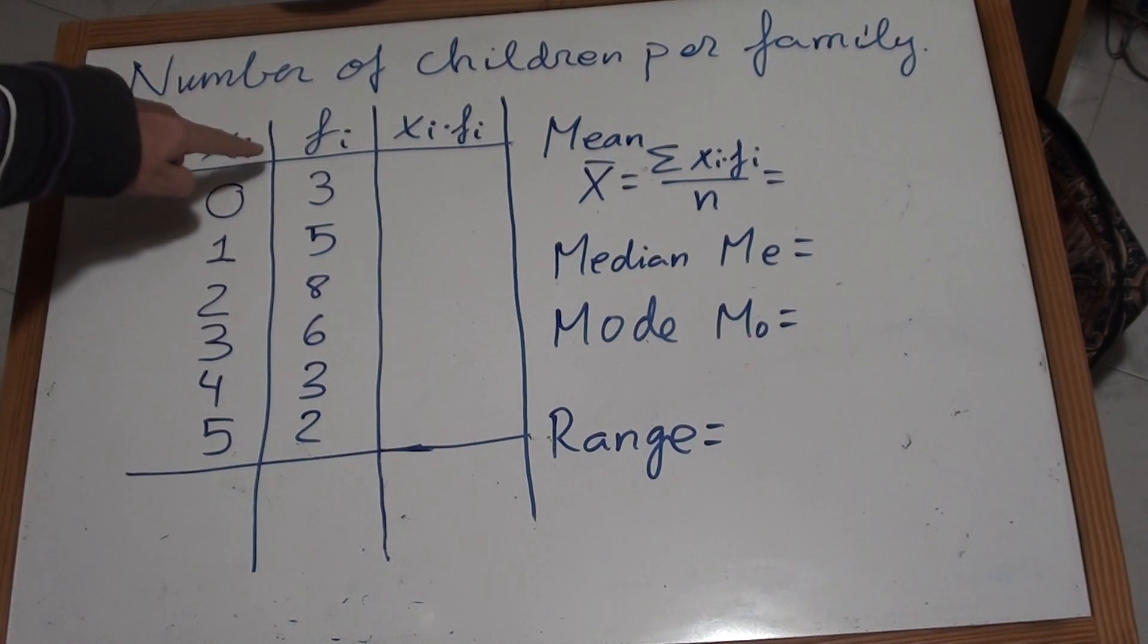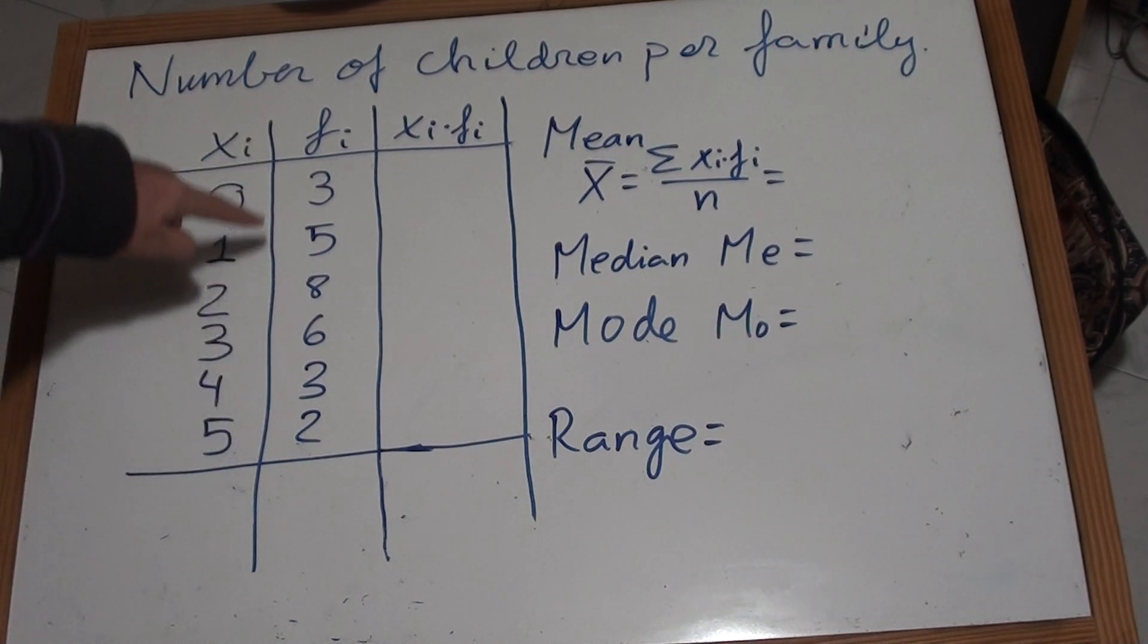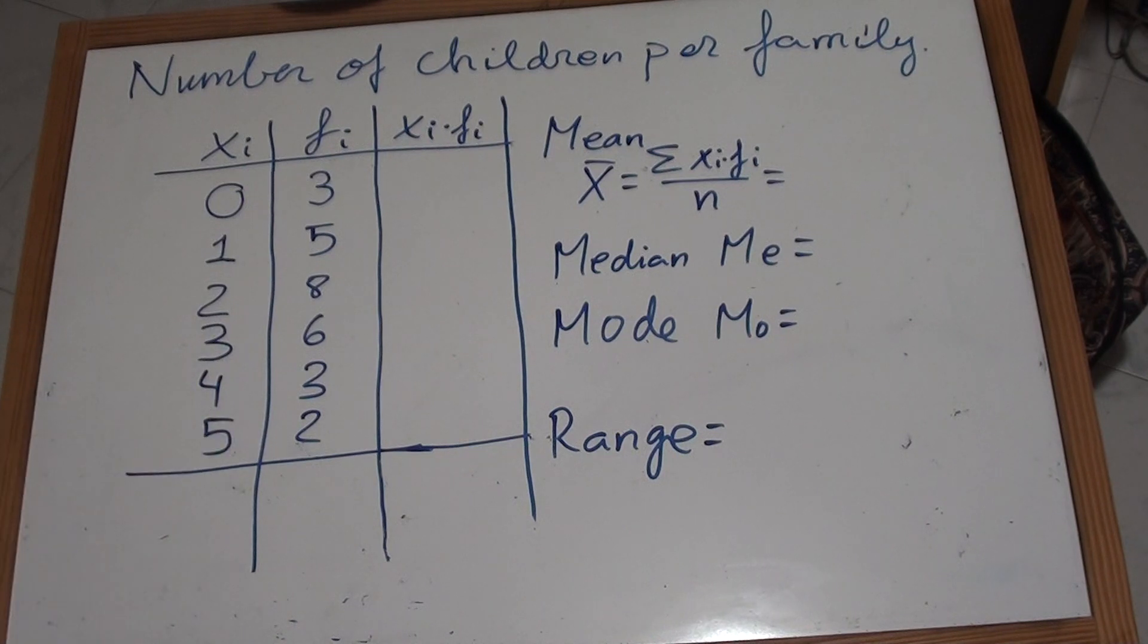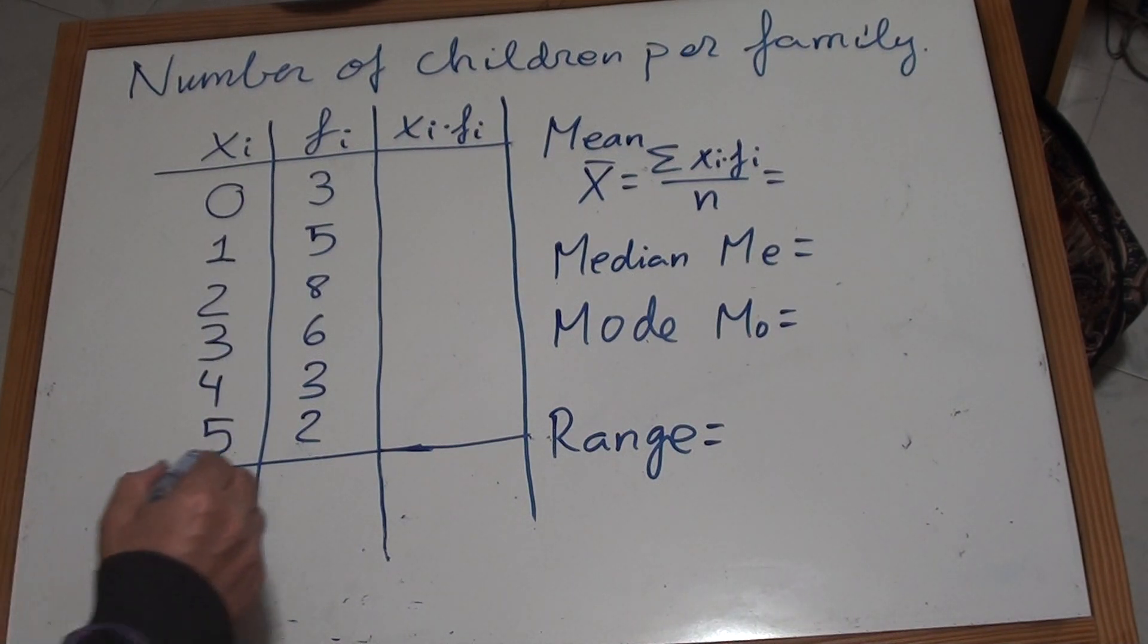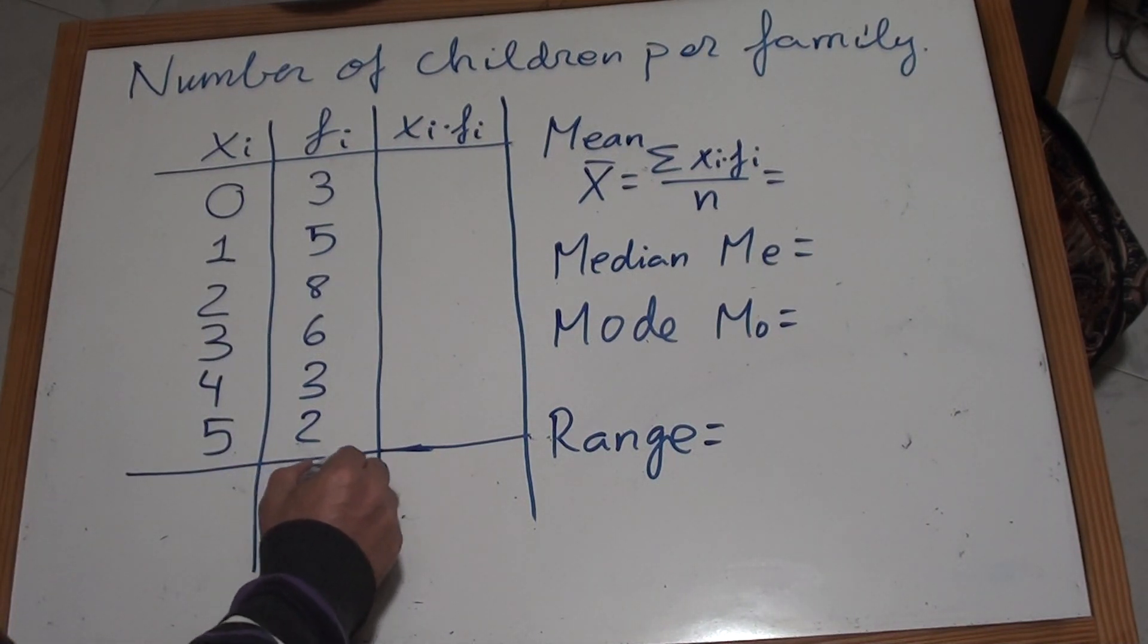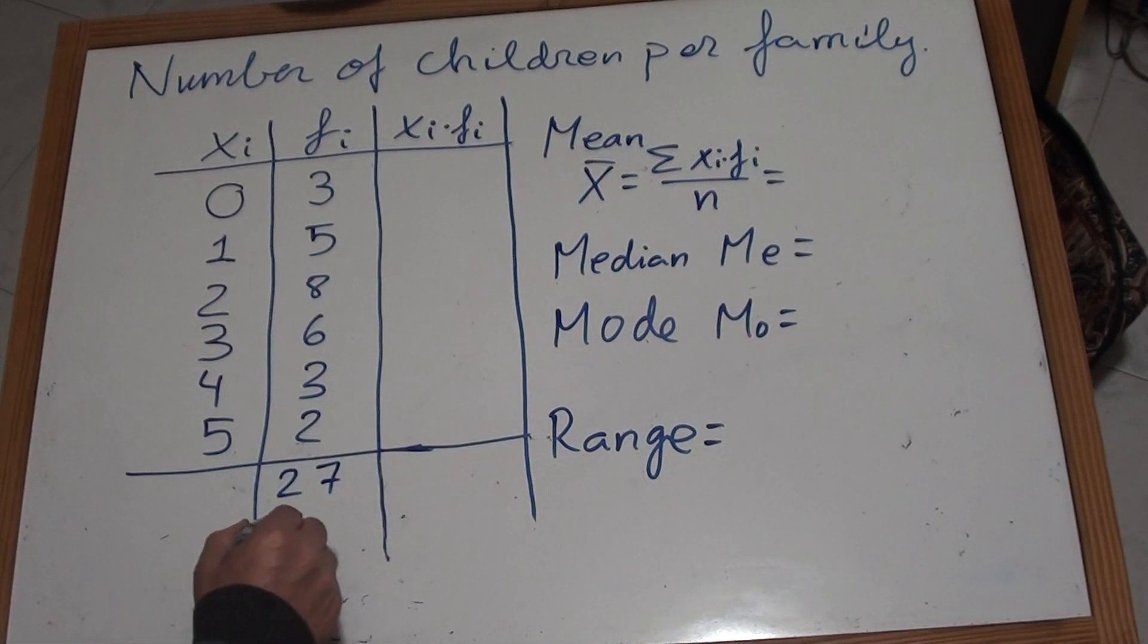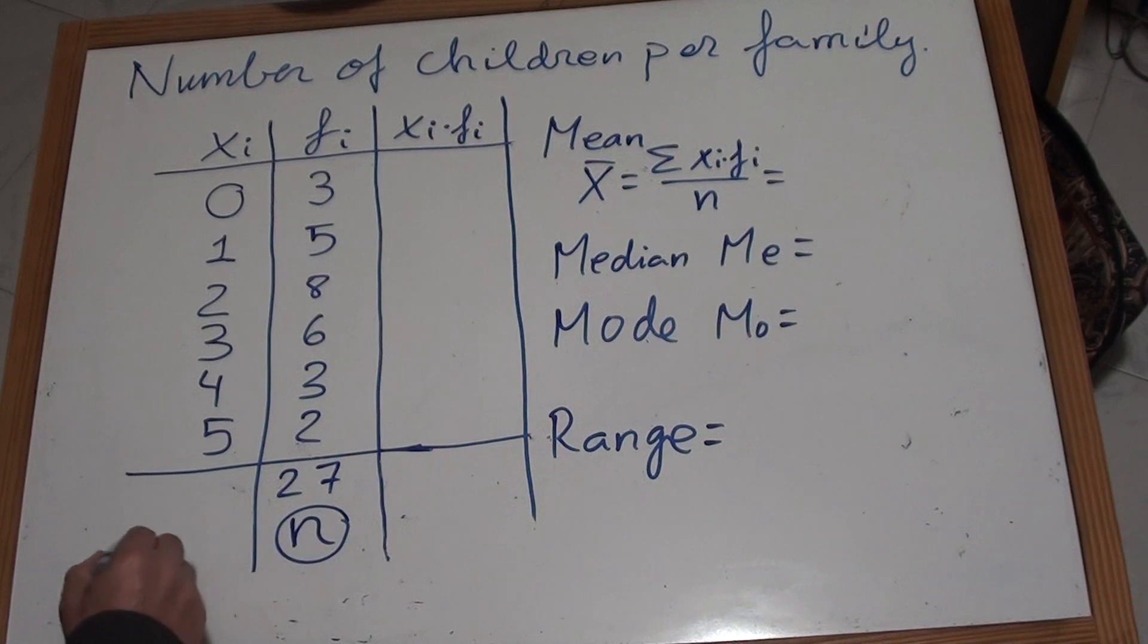Now we add all the frequencies, and this would be the number of families we have asked. In this case, this is 27 families. 27 families is a number that we call N, which is the sample size, the number of families we have asked.